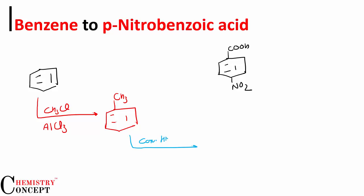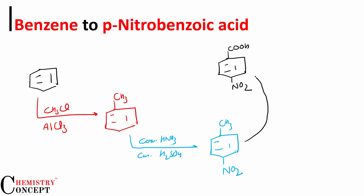Now carry out nitration by treating with concentrated nitric acid and concentrated sulfuric acid. We'll get the nitro group at the para position. Then for the final step, carry out oxidation in the presence of KMnO4 and H+ to get the carboxylic acid.